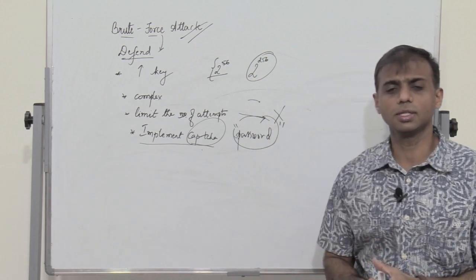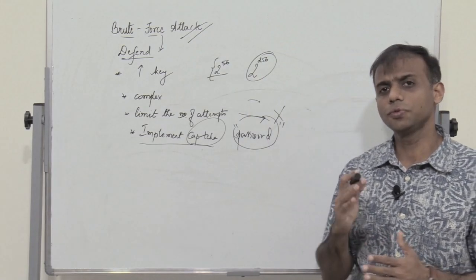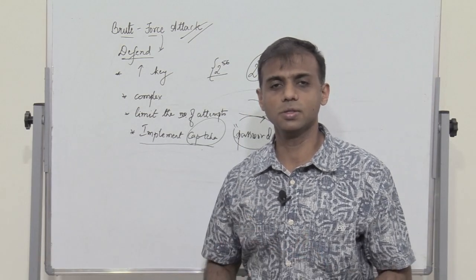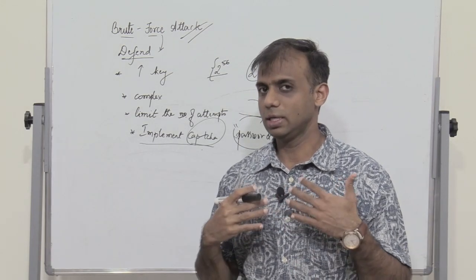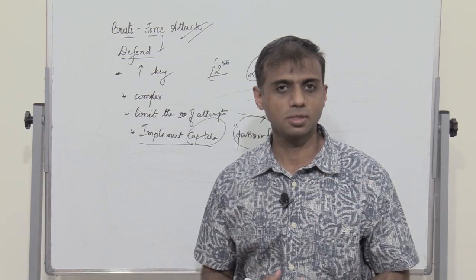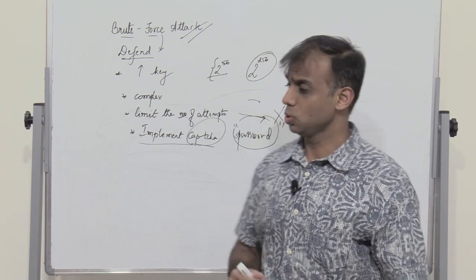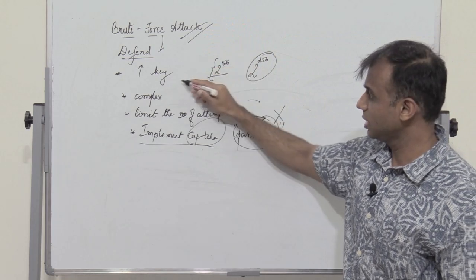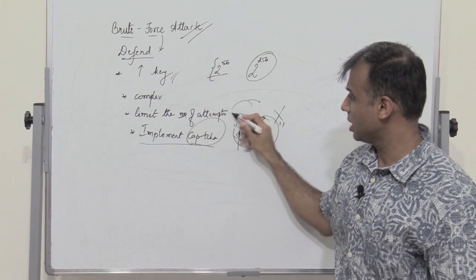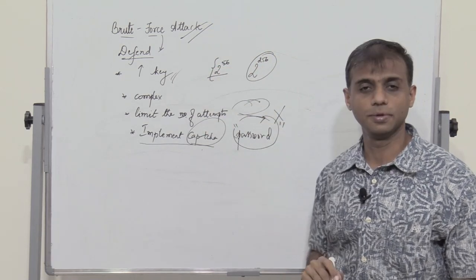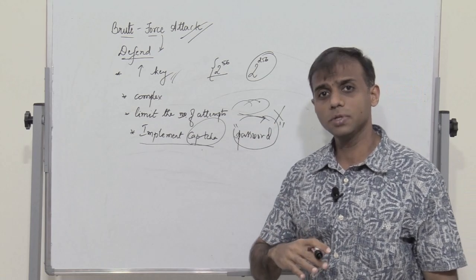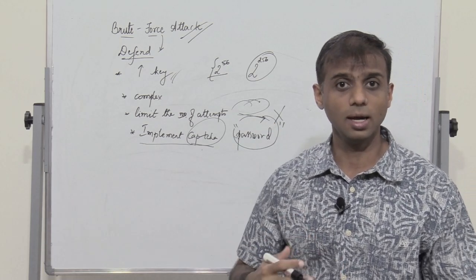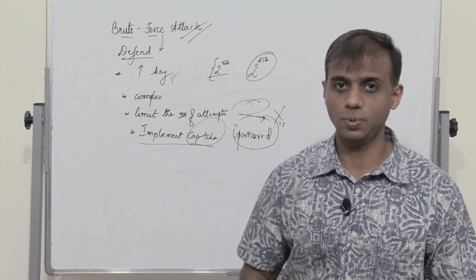So basically, what is a brute force attack? In a brute force attack, the attacker tries all possible variants of the key and attempts to illegally log into the system — either to read the plain text, identify the key, or identify the password itself. There are different types of brute force attacks, and we shall see what they are in the next video lecture.